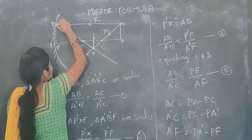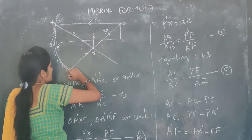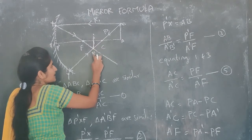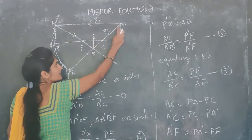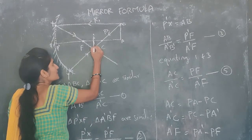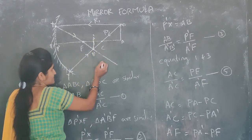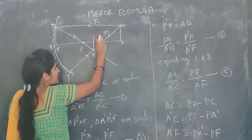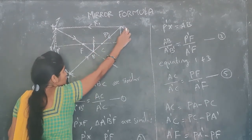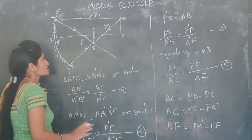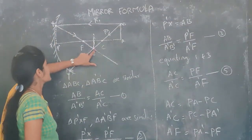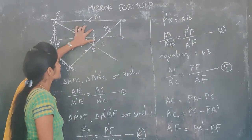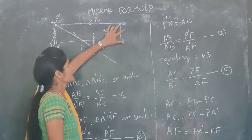These two reflected rays meet at a point called B dash — this is the image of the tip B. I am drawing a perpendicular line to the principal axis, forming the image of A. So A dash is the image of A and B dash is the image of B. The two reflected rays are meeting at B dash, giving us A dash B dash as the image of AB.